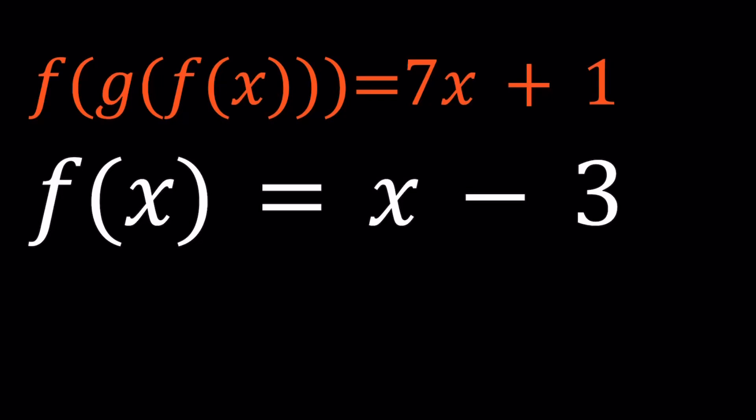Hello everyone. In this video we're going to be solving a functional system, kind of like a functional equation but there are two equations. We have f of g of f of x equals 7x plus 1 and f of x equals x minus 3. So we're going to be solving for g of x obviously because we already know what f of x equals. Let's get started.